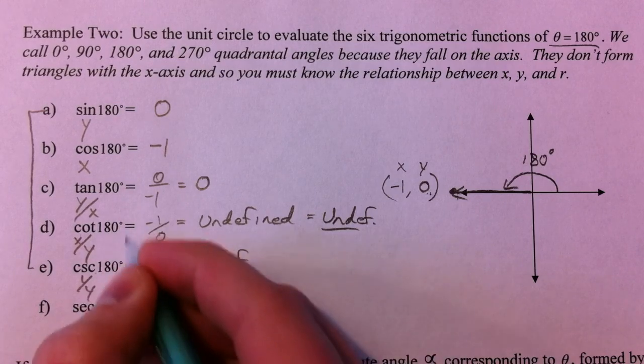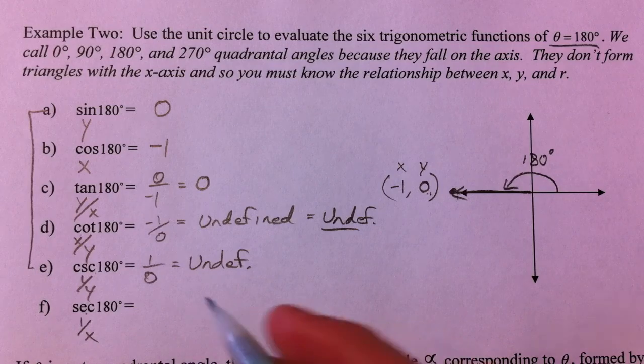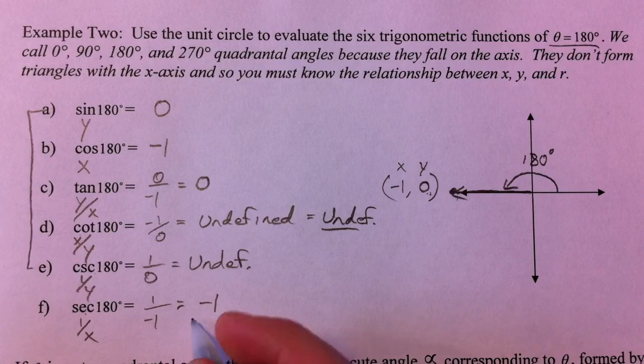And so you'll notice that a lot of times on the quadrant angles, you're not going to have things defined when they're reciprocals of 0. Reciprocal of negative 1 is, in fact, negative 1.